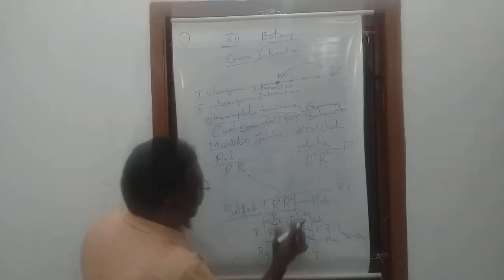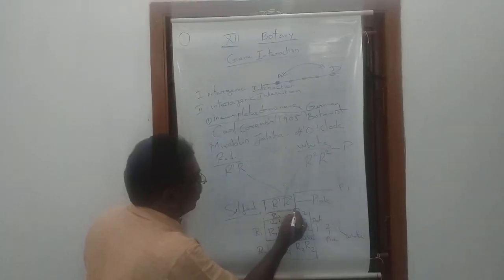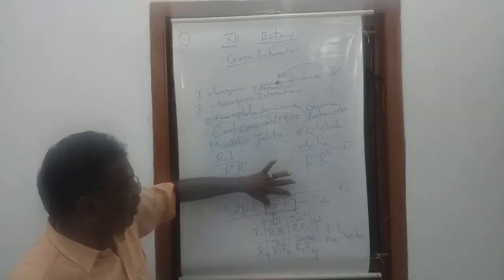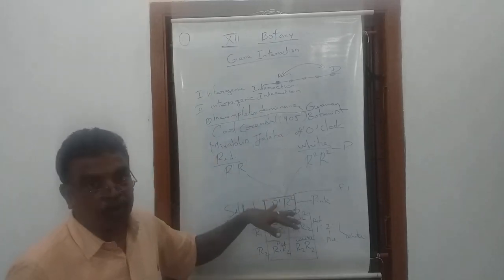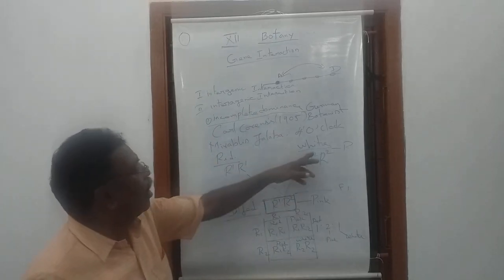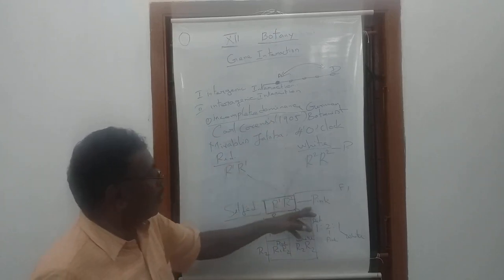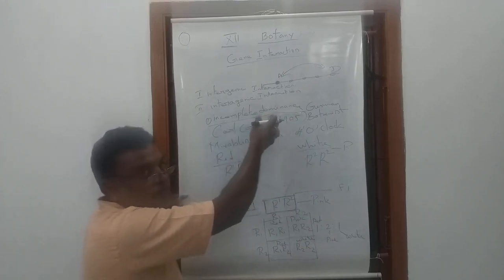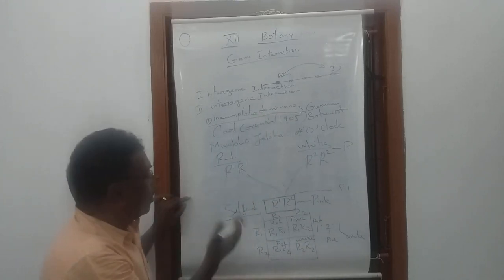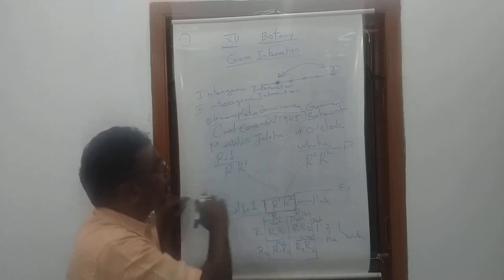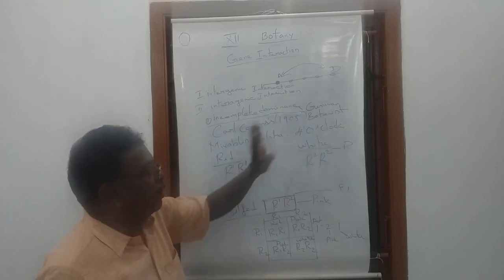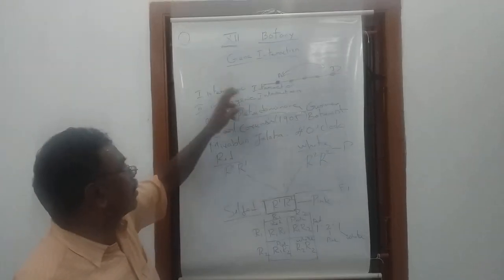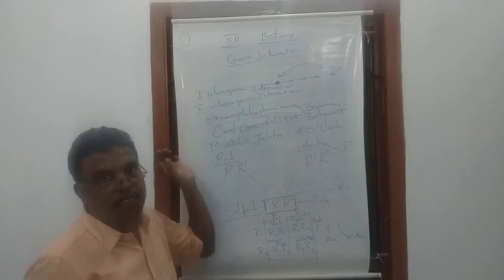The intermediate phenotype is the incomplete one. In Mendel's first law — the law of dominance — the dominant character is expressed in the first generation. But here, not red, not white — only pink is expressed. That is called incomplete dominance, where the dominant character is not fully expressed. This is the intragenic interaction. In the next class, we will study intergenic interaction. Thank you.